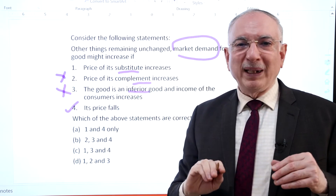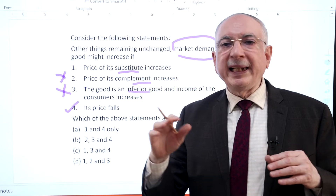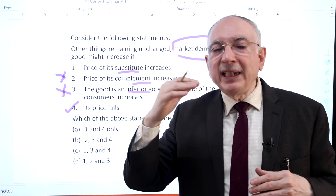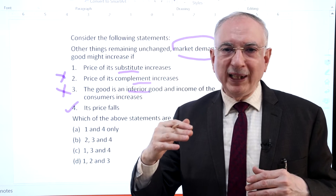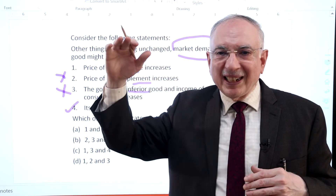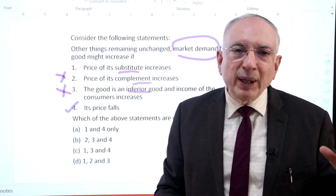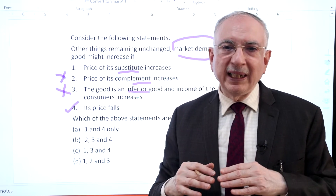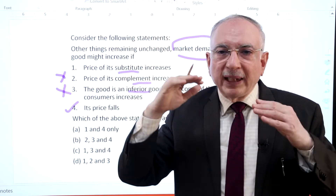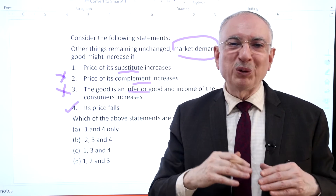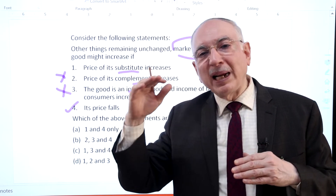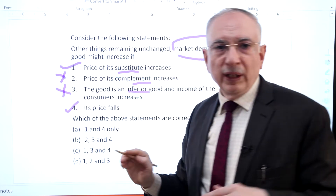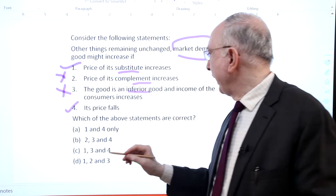In contrast to complementary goods, goods like tea and coffee are substitutes — not consumed together. Since tea is a substitute for coffee, if the price of coffee increases, the consumer can shift to tea and hence consumption of tea is likely to go up. The demand for a good usually moves in the direction of the price of its substitute. Hence statement 1 is correct. So option A is the correct answer.